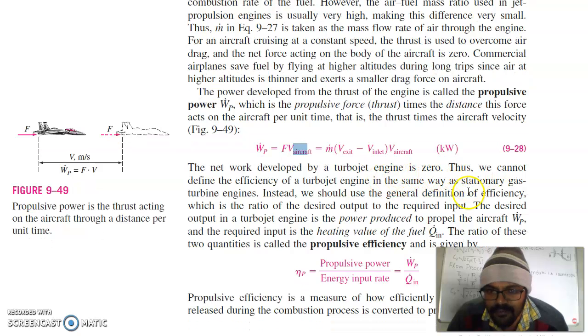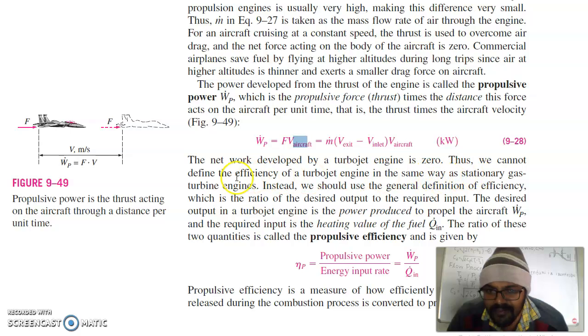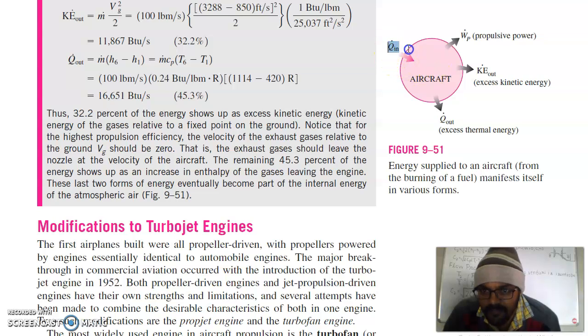The net work developed by a turbojet engine is zero. Thus, we cannot define the efficiency of turbojet engine in the same way as a stationary gas turbine engine. Instead, we should use the general definition of efficiency which is ratio of desired output to the required input. Desired output is the propulsive power and input is the heat supplied in the terms of fuel, that is m fuel dot times calorific value. This is your propulsive efficiency of the turbojet engine. Propulsive efficiency is a measure of how efficiently the thermal energy released during the combustion process is converted to propulsive energy. This diagram shows that we had supplied fuel, part of fuel is lost in the form of thermal energy which is taken by exhaust gases, kinetic energy, excess kinetic energy at the exhaust is also lost, and propulsive power is the output which we need.